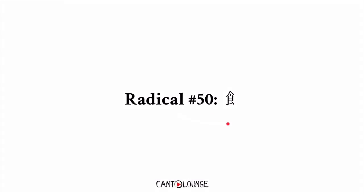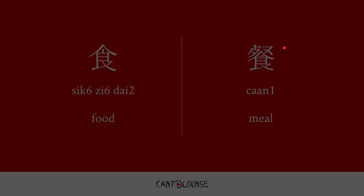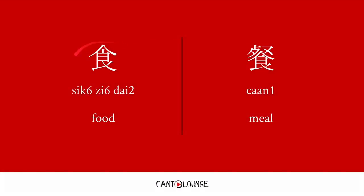And radical number 50: 食, meaning food or to eat. 食字旁 on the side — for example, 飲, meaning to drink, kind of related to eating. And 食字底, if it's at the bottom — 餐, which means a meal.